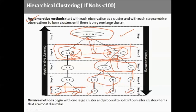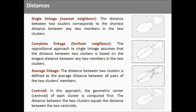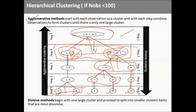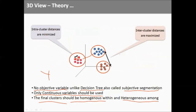Agglomerative and divisive ultimately produce the same results — this is called hierarchical clustering. Now, how do we say that AB and CDE are distinct? Recall that inter-cluster distance should be high and intra-cluster distance should be low. So how do we calculate distances among clusters? Let's move ahead.